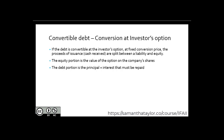When looking at convertible debt — convertible at the investor's option with a fixed conversion price — the proceeds of the issuance, that is, the cash received, is split between a liability and equity. The debt portion is the principal and interest that must be repaid, while the equity portion is the value of the option of the company's shares.